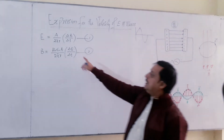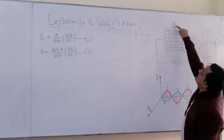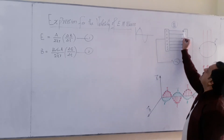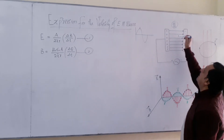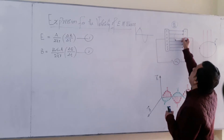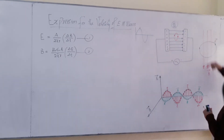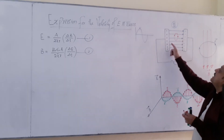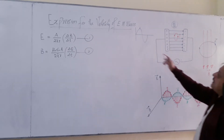Delta E by delta T is responsible for B, or we can say delta E by delta T is also responsible for the displacement current. In the space between the plates, displacement current exists, and according to Ampere's law, current is responsible for magnetic field. So here a magnetic field is produced. If you see, the magnetic field is straight and the electric field is circular, but they are perpendicular to each other at each point.